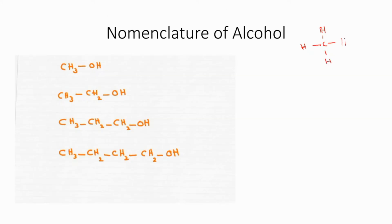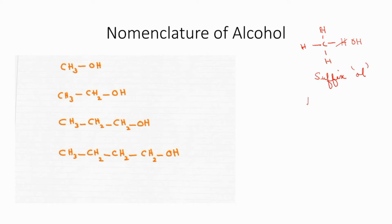Now we are going to learn the nomenclature of simple alcohols. Again we have taken methane. Whenever an OH group comes and attaches to that carbon atom, we identify that functional group as alcohol. If an OH group is present in the compound, we will use the suffix '-ol'. So earlier it was methane — we remove that 'e' and attach 'ol'. The name of this compound is methanol.